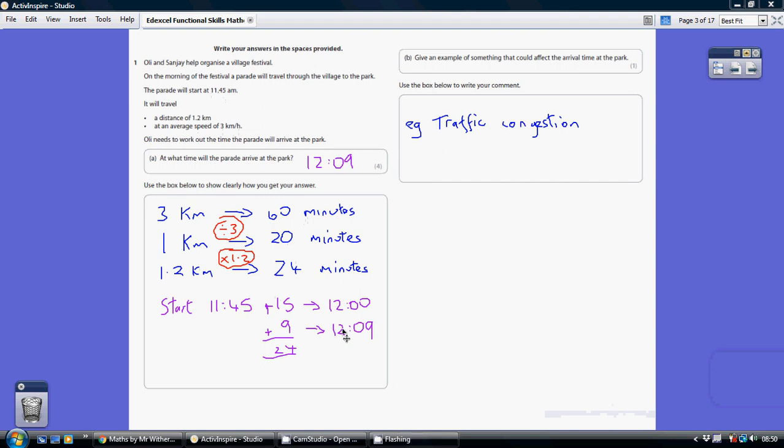Now for part B, give an example of something that could affect the arrival time at the park. Well, anything that's going to slow you down really. Traffic lights, traffic congestion, anything like that.